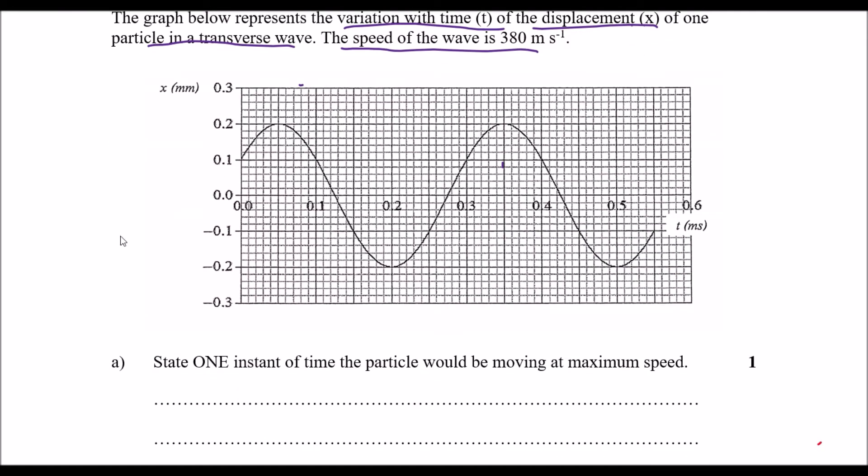Question 1 says state one instant of time where the particle would be moving at maximum speed. Now maximum speed would actually be in one of these points near the node.